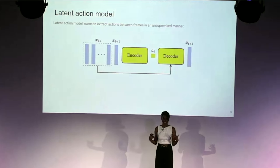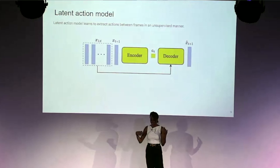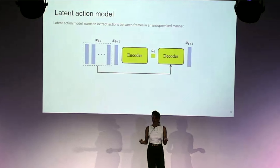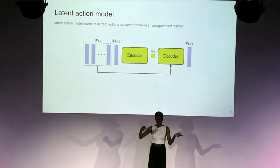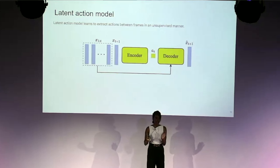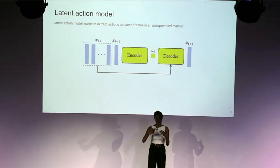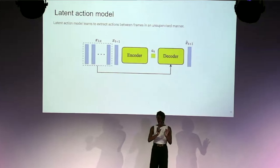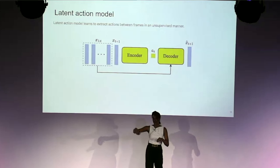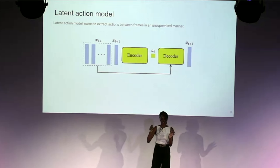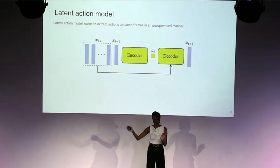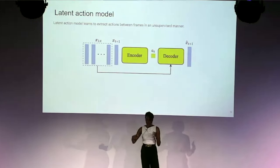The second component is the latent action model, which is one of the most interesting parts of Genie. We learn a representation over frames that captures actions in a completely unsupervised manner, without any action labels. Given a current frame and the next frame, we compress these into a single embedding using a VQ model so that the representation is discrete. This latent action is then plugged into a forward dynamics model — given the frame and latent action, predict the next frame. Because the latent action sees both past and future, it learns to compress just enough information to predict the future given only the past, which gives us controllability.